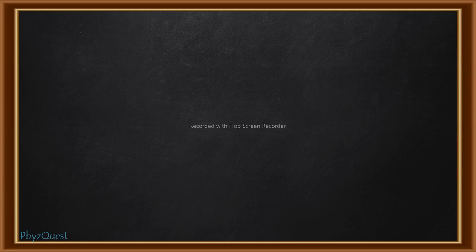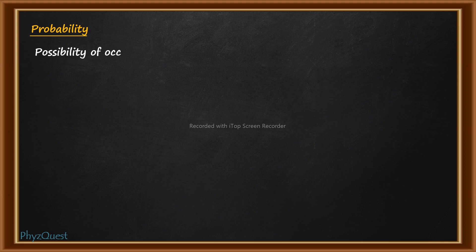Hello, welcome to FizzQuest. In this video, we will discuss different types of rules of probability. Probability, in simple definition, means the possibility of occurrence of any event.